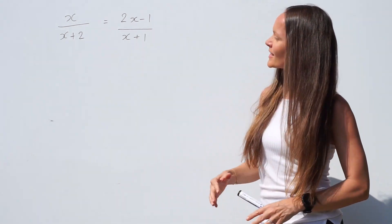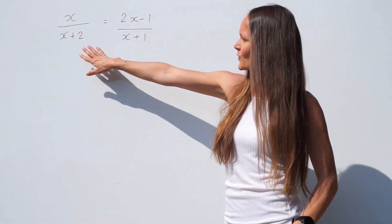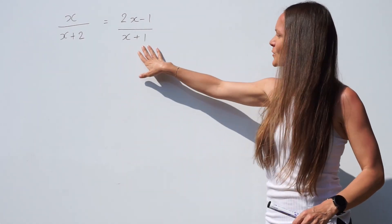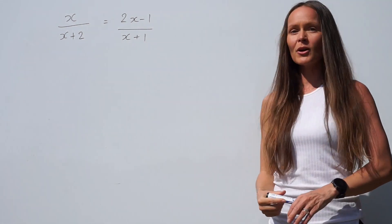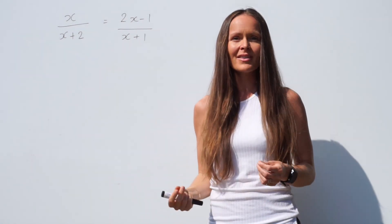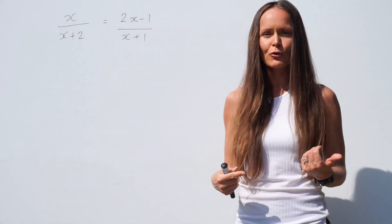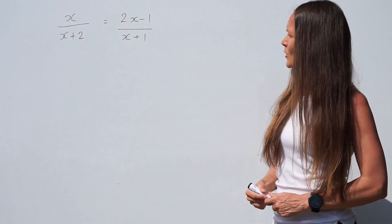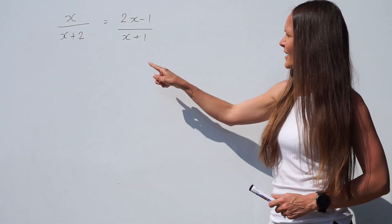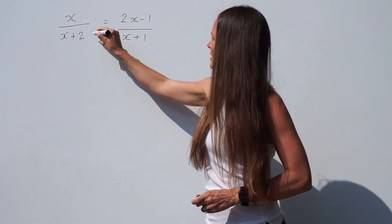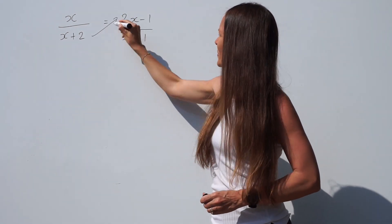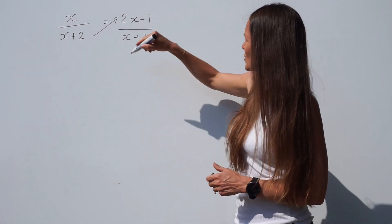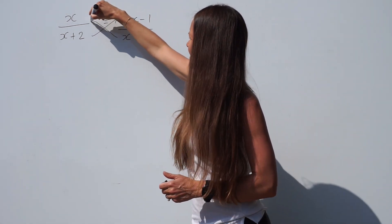In the next example, it says x over x plus 2 is equal to 2x minus 1 over x plus 1. I'm going to apply the same method — cross multiplying — to get rid of these fractions. So I'm going to multiply the right hand side of the equation by this denominator, and the left hand side of the equation by the other denominator.